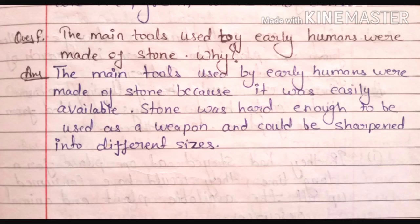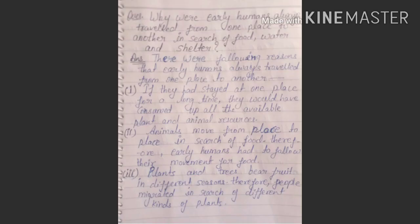Before continuing today's topic, we'll discuss the answers to the homework questions given in our last class. Our first homework question was: the main tools used by early humans were made of stone — why? The answer is: stone was easily available, hard enough to be used as a weapon, and could be sharpened into different sizes.